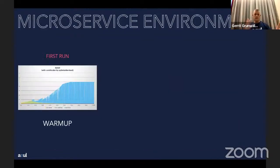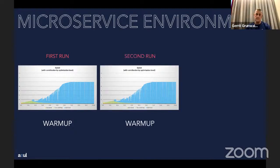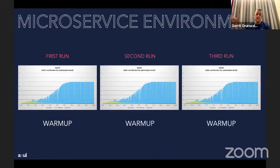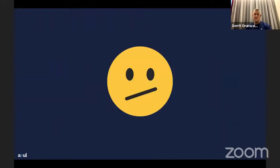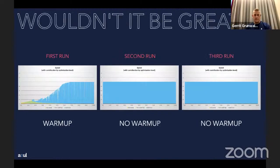With that knowledge, let's look at microservice environments today. It's not one monolith running for a month — you have lots of services spinning up and being thrown away. First run: warm up. Second run: warm up. Third run: warm up. Every time you start the JVM, you have to wait until the application reaches optimal performance before you can really benefit from the JITs. JVM startup time can be a real problem.